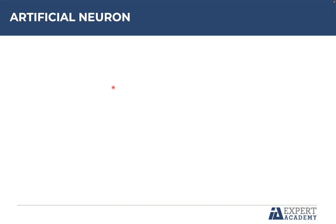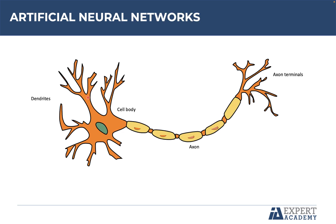Hello and welcome to this lecture where you are going to learn how an artificial neuron works, which is called a perceptron. Before, you learned about the biological fundamentals of neural networks, especially the components of the neuron and how information flows through the whole neural network. Let's start by reviewing the picture of a neuron which receives input from the dendrites, processes the information in the cell body, and transmits it through the axon generating an output.